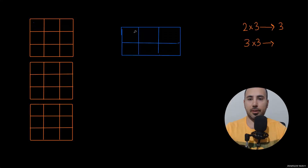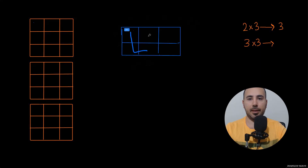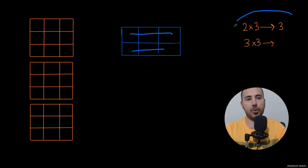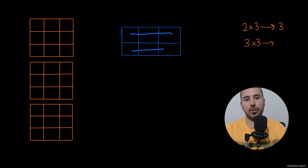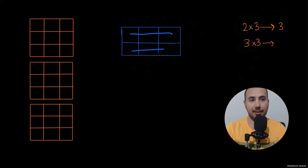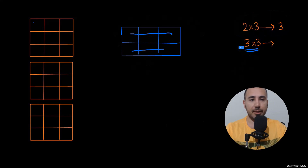A two by three grid can be tiled in exactly three ways — maybe like this, maybe like this, and number three. So a two by three grid can be tiled in three ways. Now we're going to focus on a three by three grid and use recursive tiling. It's recursive because when we do the three by three, we'll use that previous information.